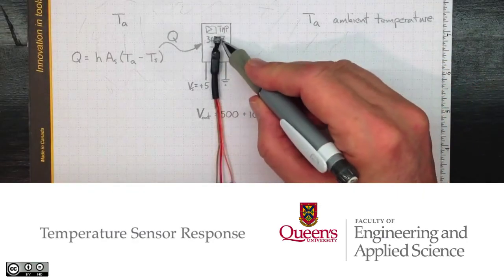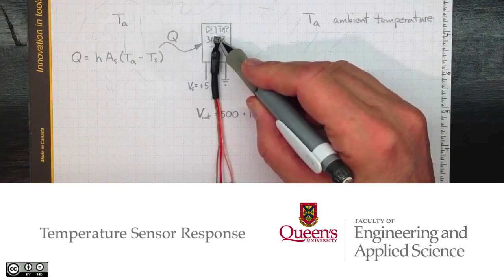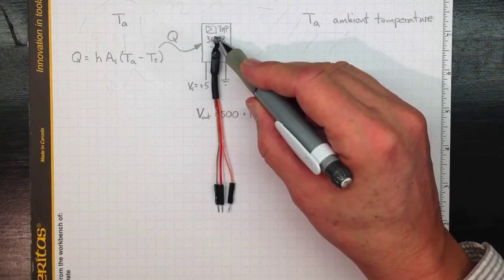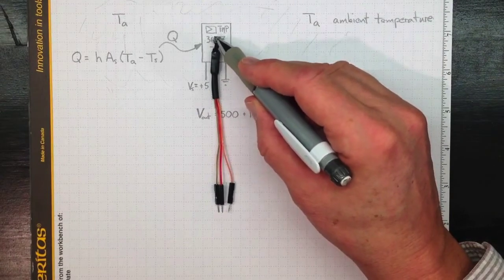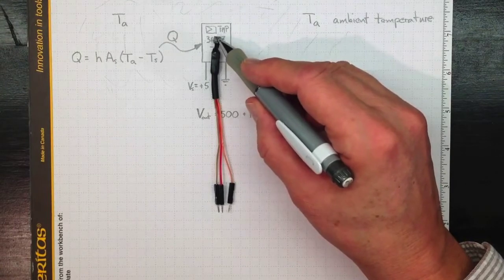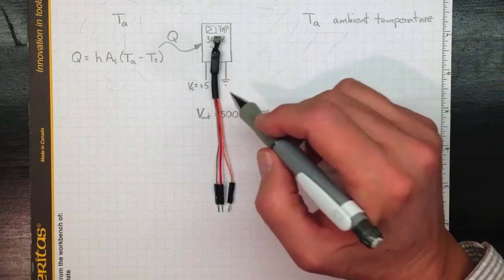If I have a temperature sensor like this TMP36 and I move it from where it is to a place where its surroundings are at a different temperature, it will take a while to come into equilibrium with those surroundings. We need to know how quickly it's going to come into equilibrium and what that response is going to look like if we can predict what we're going to measure.